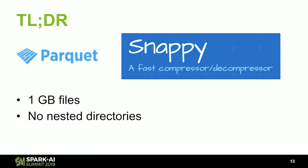Let's look at best practices for your standard data lake 101. We're going to be using the Parquet file format, the Snappy compression algorithm, one-gigabyte files, and no nested directories. The reason we like Snappy with Parquet and Spark is because Snappy is fast in compressing and decompressing. Snappy is not going to give you the smallest files — gzip gives you better compression — but gzip isn't splittable and it's not going to be as fast when decompressing. So that's why Snappy is great for Spark.